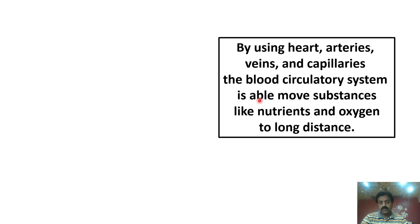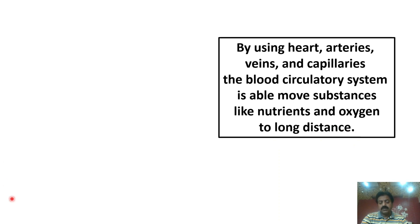By using the heart, arteries, veins, and capillaries, the blood circulatory system is able to move substances like nutrients and oxygen over long distances. Now let's see an animation of how blood circulates in our whole body.